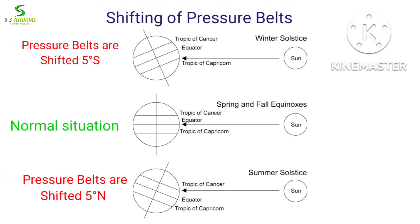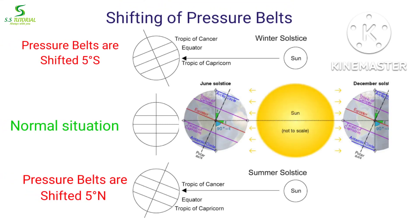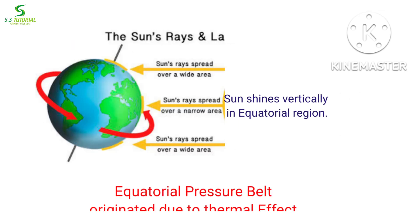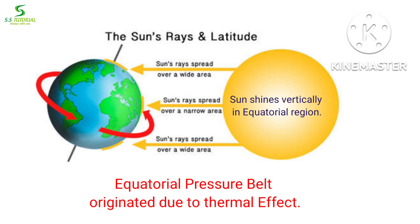The pressure belt shifts 5 degrees north of the equator when the sun is overhead the tropic of Cancer, and shifts 5 degrees south of the equator when the sun is overhead the tropic of Capricorn. The equatorial pressure belt originates as a result of thermal effect, because the sun shines perpendicularly in the equatorial region.